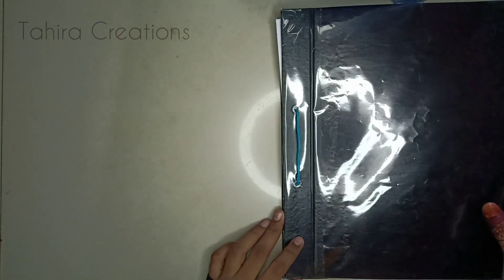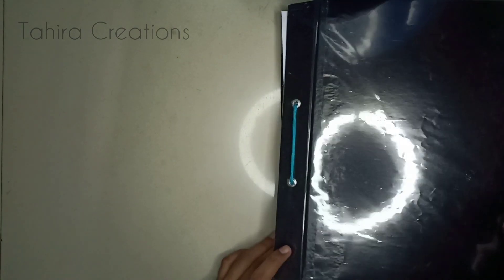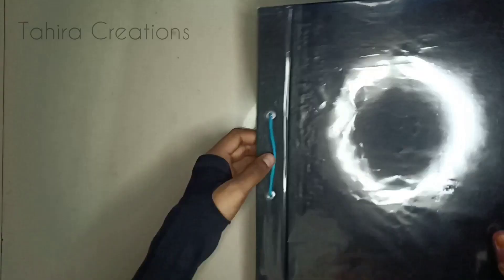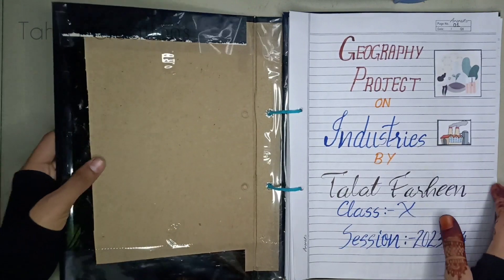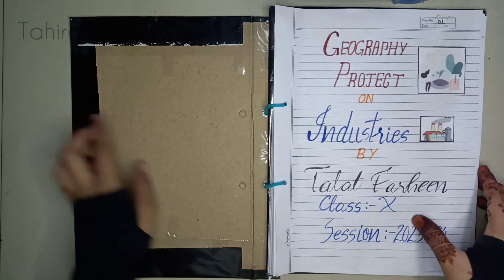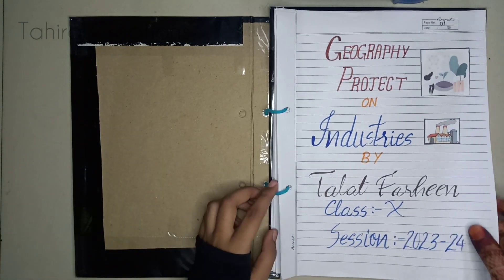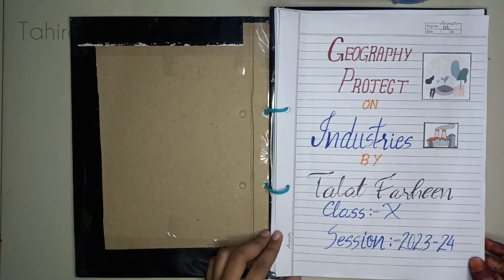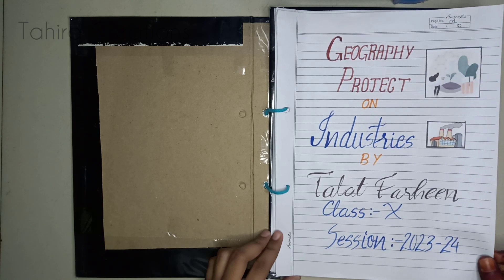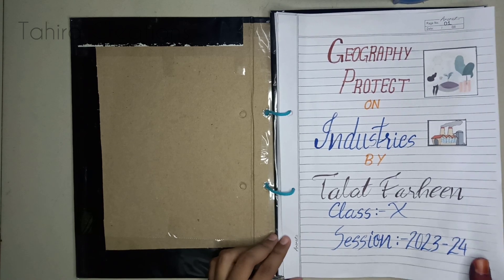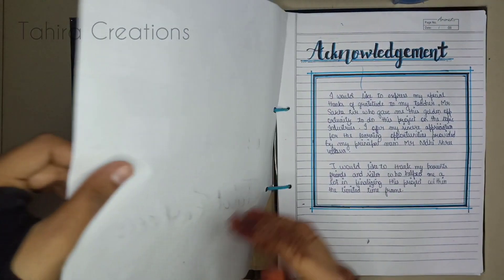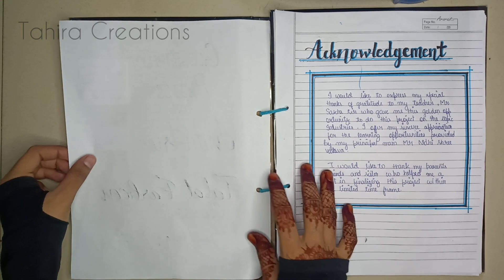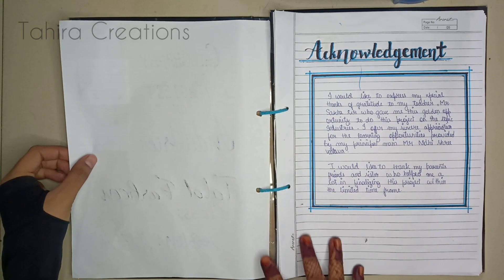This is the geography project of Class 10th ICSE for this year. This is the front page — the topic is industries: different types of industries, the raw materials used, and how everything works. Next is the acknowledgement, as always.